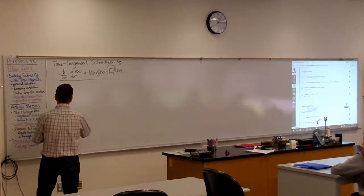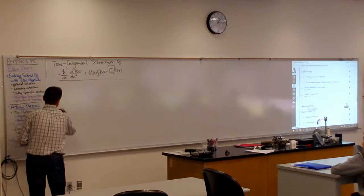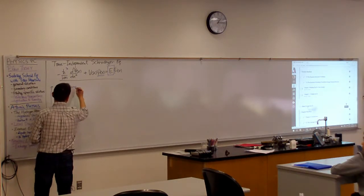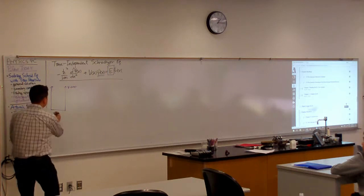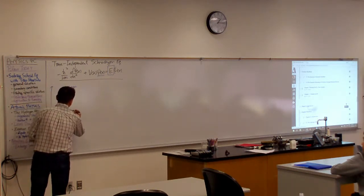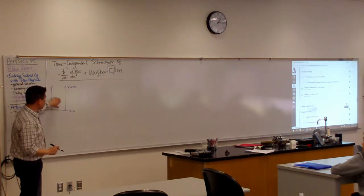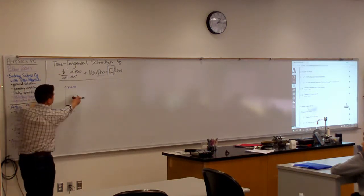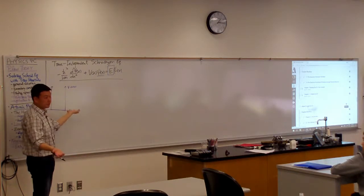So you have, this is the infinite square well. The potential goes to infinity at either end. And potential is zero here. So for this infinite square well, the Schrödinger equation became really simple. Because outside here, wave function has to be zero.